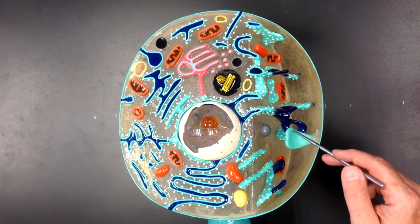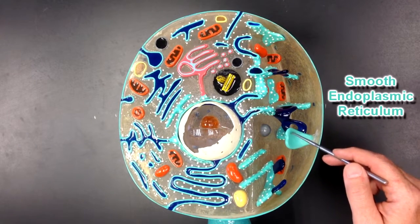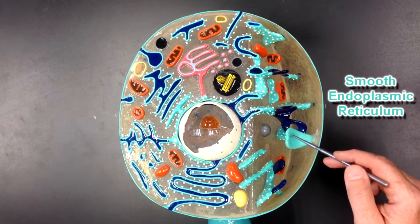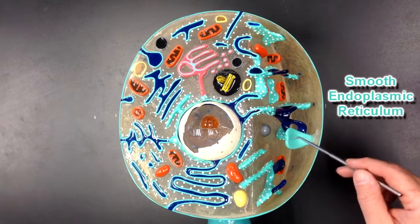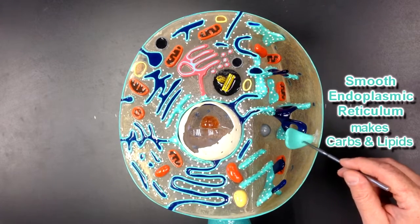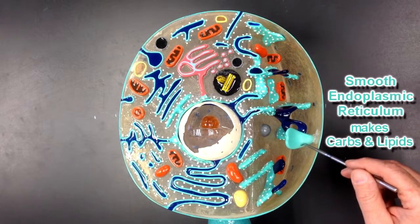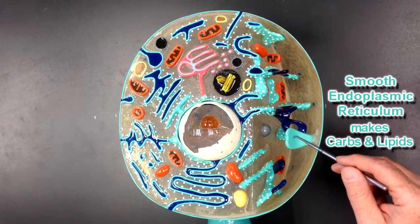Here's an example of smooth endoplasmic reticulum. It's called smooth because it does not have the ribosomes on it. This is where carbohydrates and lipids would be produced and stored.